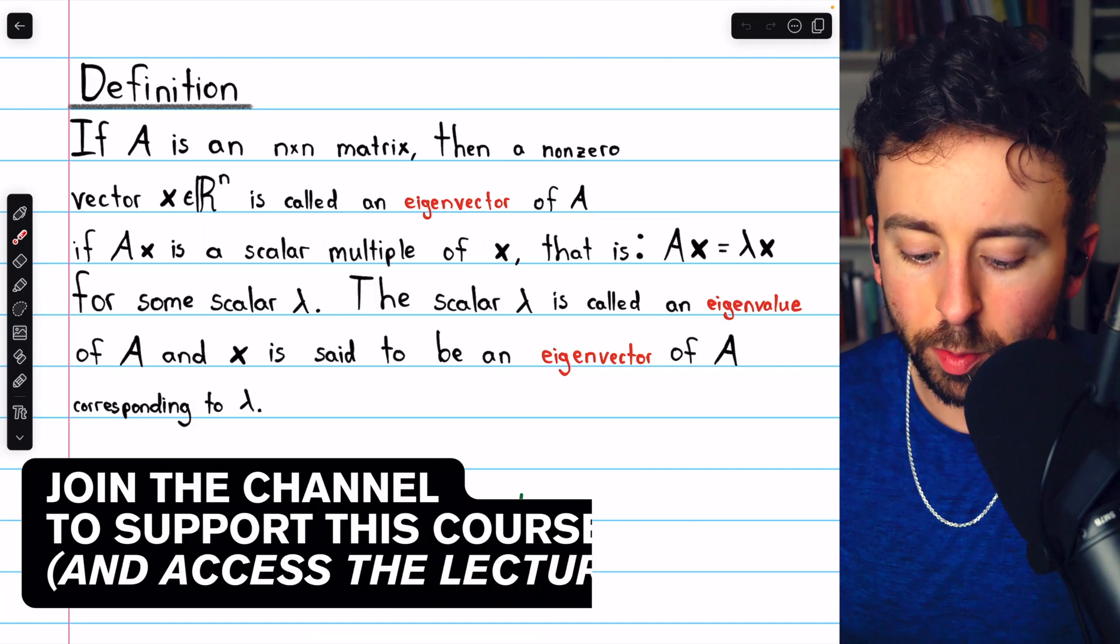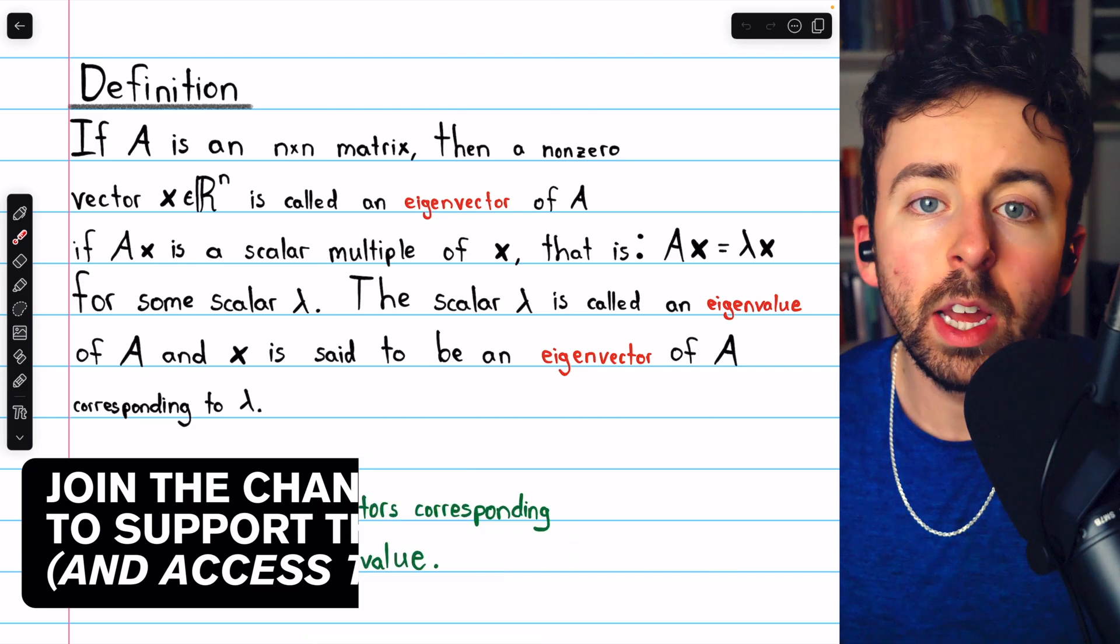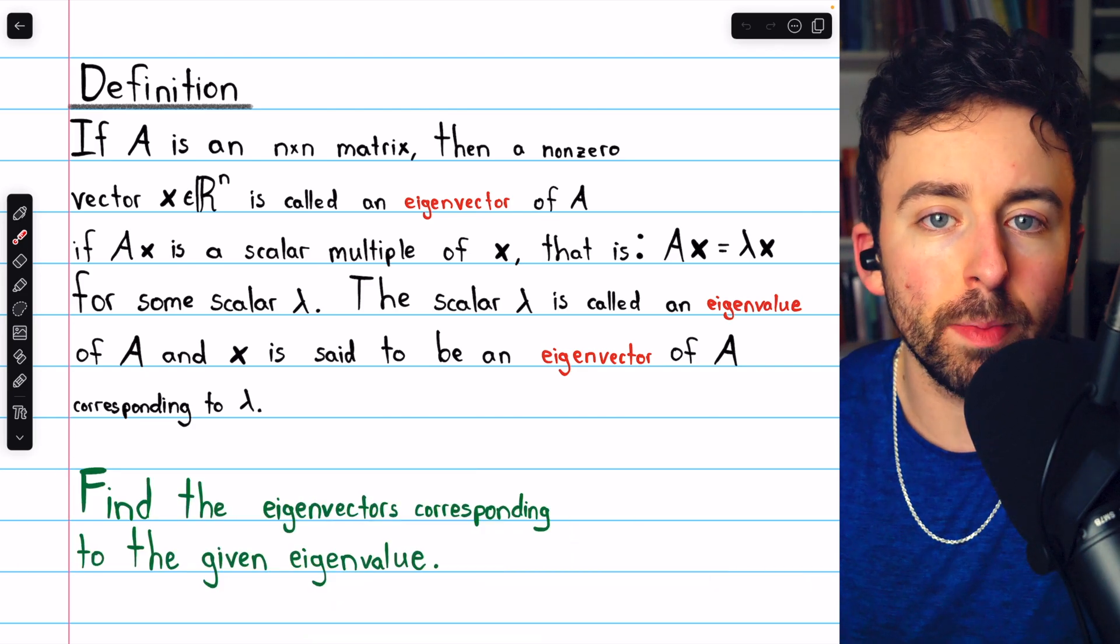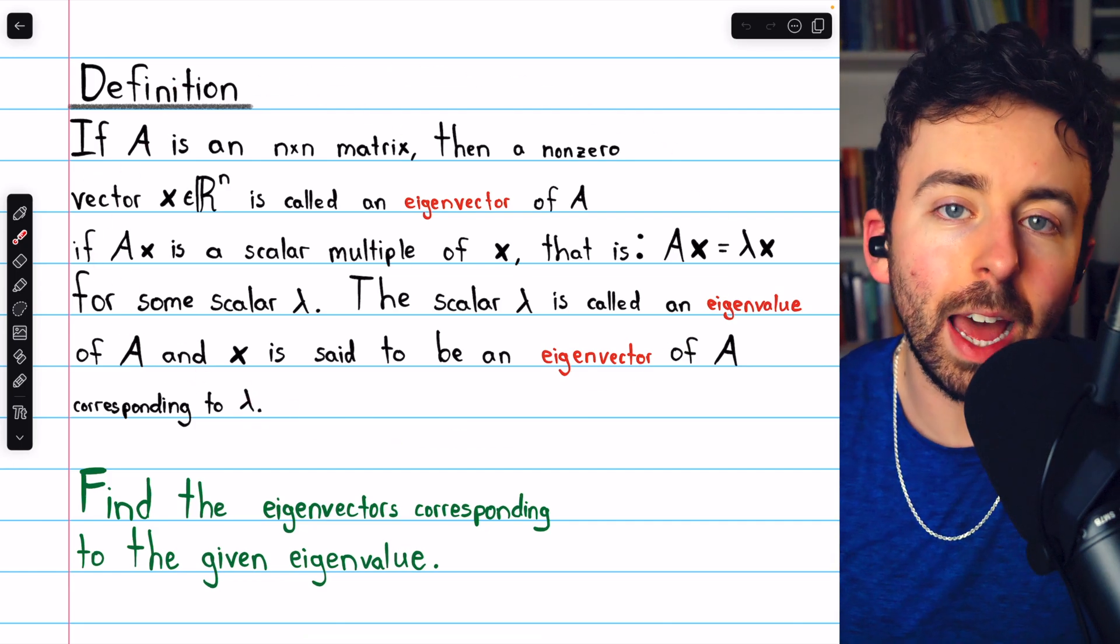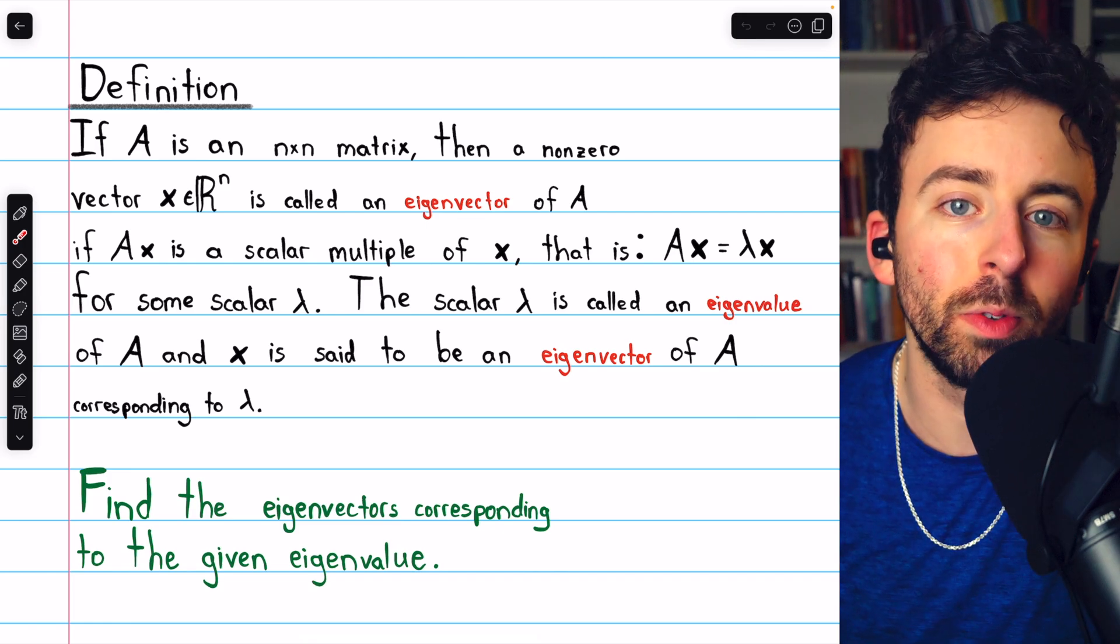We're going to go through two examples of finding the eigenvectors corresponding to a given eigenvalue. The first example will be with a 2 by 2 matrix and then with a 3 by 3 matrix. Here's the definition of eigenvectors and eigenvalues if you need to review. I'll leave a link in the description to my lesson introducing these topics.